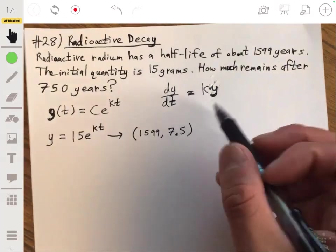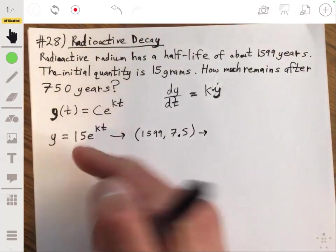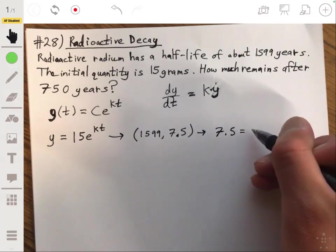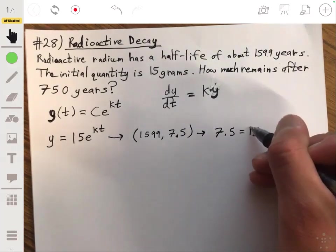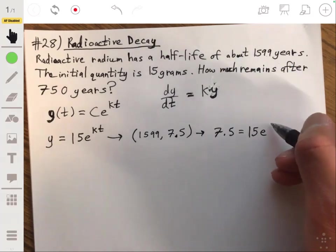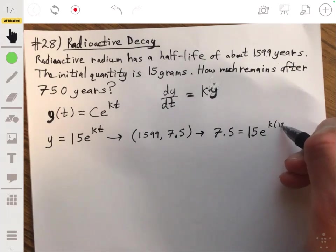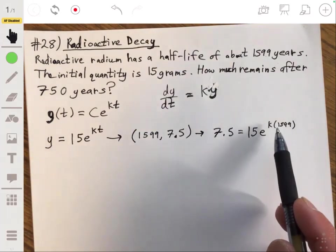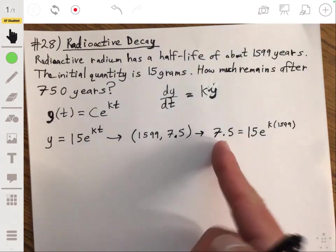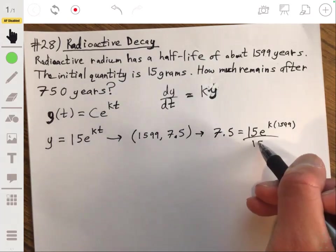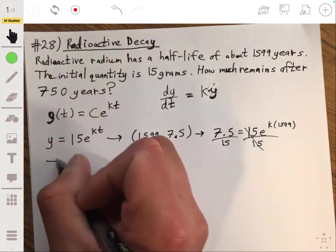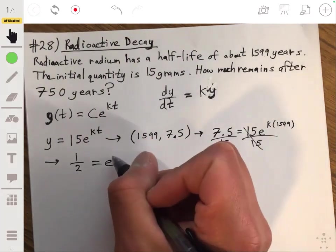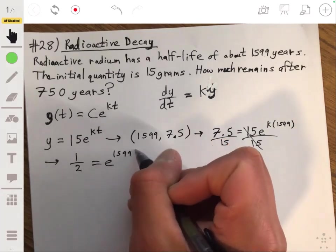I don't need to get that formal, but that's essentially what we're doing, because that's half of 15. So we can do 7.5 being equal to 15e to the k times 1599. And then we just solve this equation for k. We're going to divide both sides by 15.